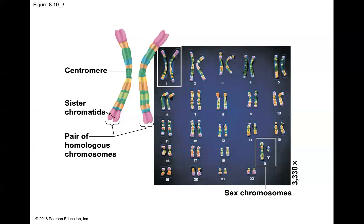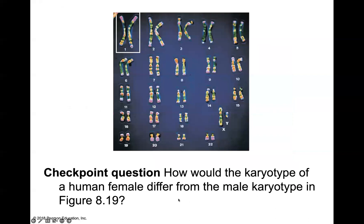Chromosomes one through 22 are known as autosomes, encoding for various genes for basic growth, maintenance, traits, and physical characteristics. The second set of chromosomes are our sex chromosomes, which determine gender genetically: XY for male and XX for female. Checkpoint question: How would the karyotype of a female differ from a male karyotype? We'll see the difference in that pair of sex chromosomes — which pair would be female, which would be male?